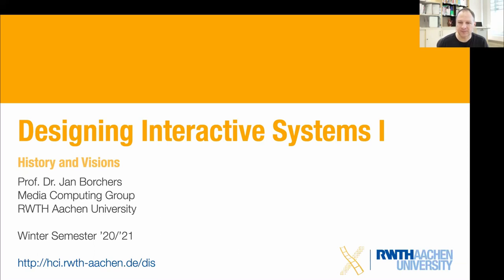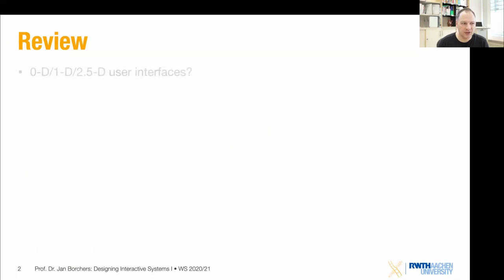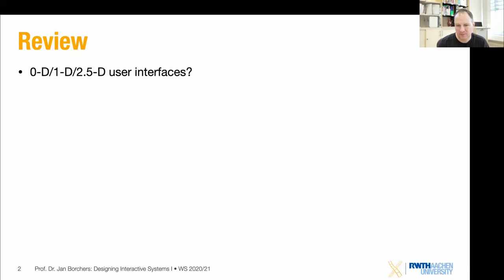A very quick review of last week's topics. We talked about Jacob Nielsen's classification into 0D, 1D, and 2.5D user interfaces. The 0D interfaces were when there was no interaction at all — basically batch processing systems where you'd give all the code and the next day get the result. The 1D systems were command line interfaces, and the 2.5D started with the Sketchpad and Apple 2 computers where word processors made interaction much more efficient.